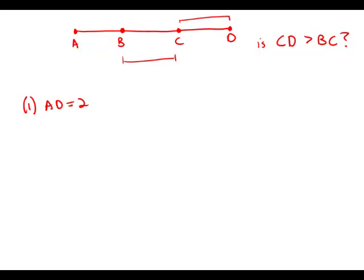Moving on to the statements: Statement 1 tells us that AD equals 20. That just tells us about the whole length overall — it tells us absolutely nothing about how the length is split up. So that statement by itself is wildly insufficient.